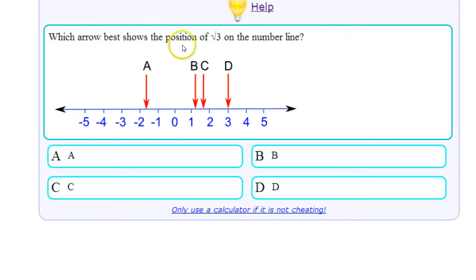All right, so which arrow best shows the position of square root of 3? Would it be A, B, C, or D? Now A is probably not the best choice because that's negative and we're looking for a positive root 3.